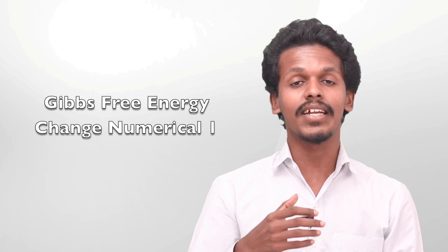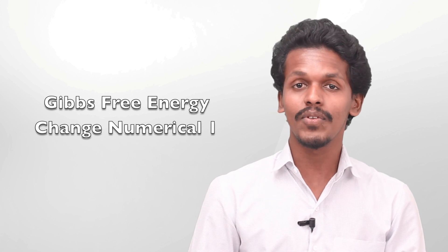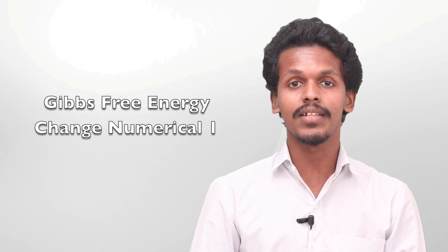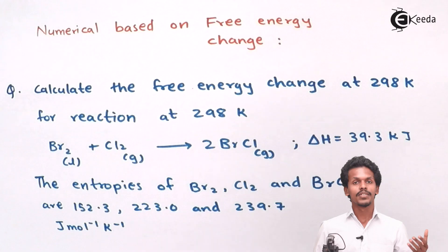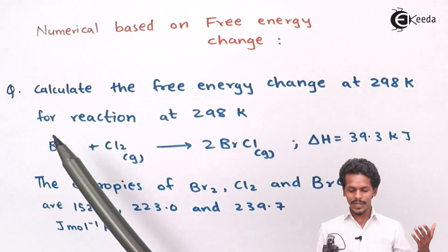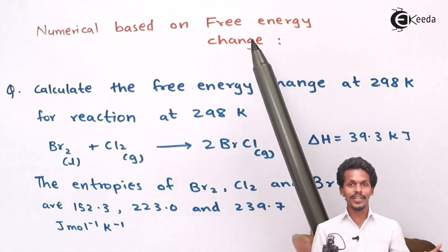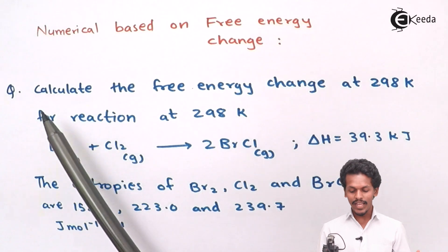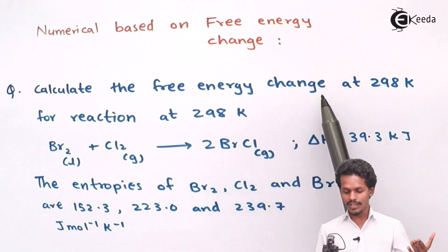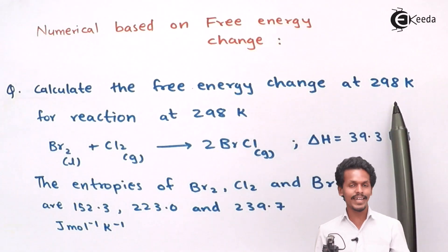Hello friends. Now we are going to solve a numerical which is based on Gibbs free energy change. We are going to solve different kinds of numericals, and we are now going to do the first one. This question asks us to calculate the free energy change at 298 Kelvin.